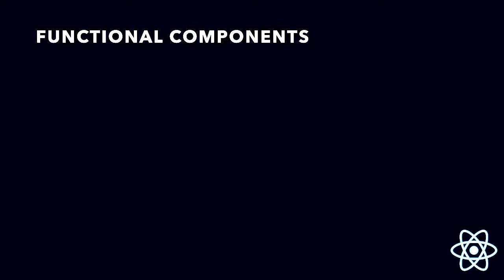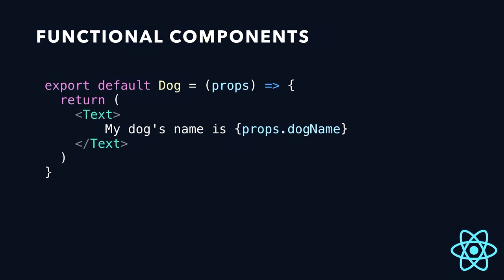Our component doesn't actually do anything other than display some data we pass down to it — so this is called a presentational component. In this case we don't actually need to write it as a class, because we don't need to access any of the other features that a component class gives us. So we can rewrite it as a function, make it a bit easier. Export default, still capital letter Dog. We're sending it down some props — now we're including the props as an argument, so we don't need the 'this'. This is some fancy ES6 arrow function syntax — shorthand instead of writing function.